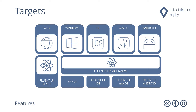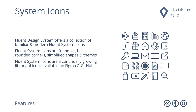You can also target Windows, iOS, macOS and Android with Fluent UI React Native. Fluent Design System features system icons which are a collection of modern icons from Microsoft that are friendlier, have rounded corners, simplified shapes and come in regular and filled themes for both designers and developers on Figma or GitHub at github.com.